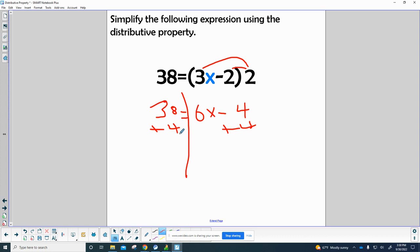38 plus 4 would be 42, and all of that equals 6x. At that point, we've got to do something to find x again, so we divide both sides by 6. When you do that, you end up with 7 equals x.